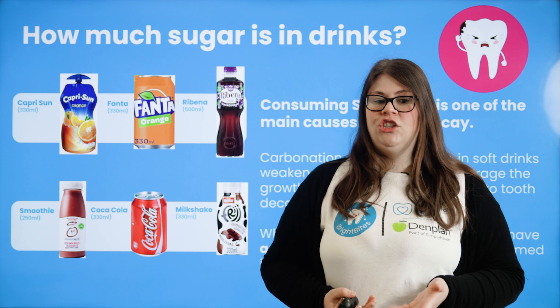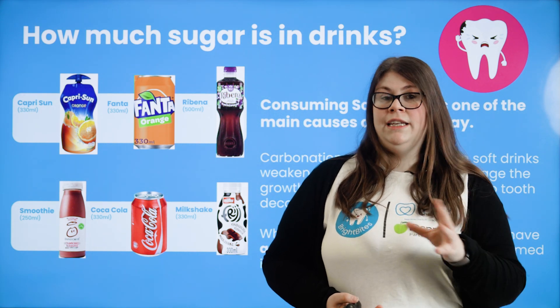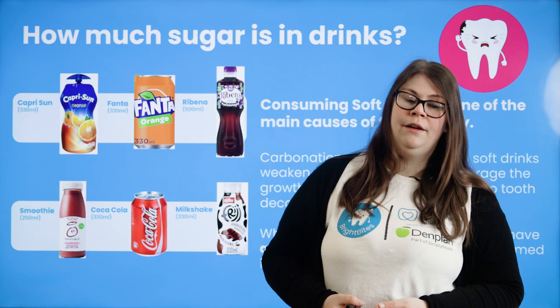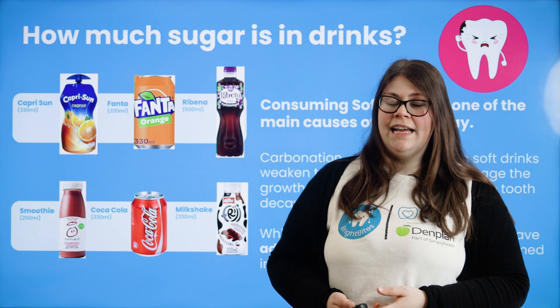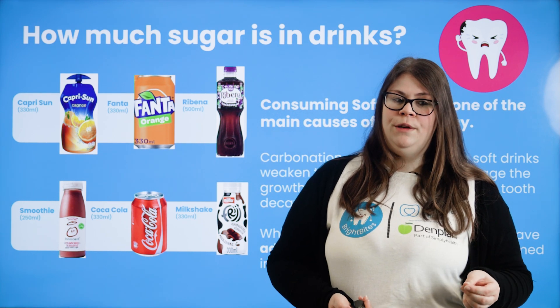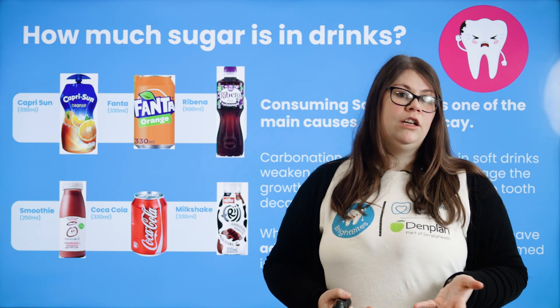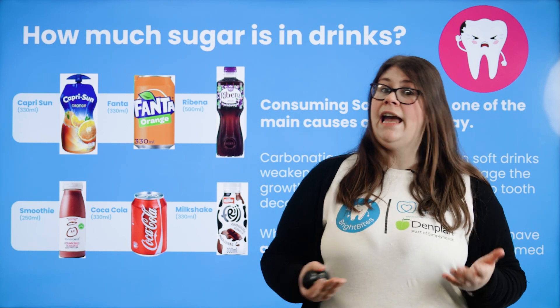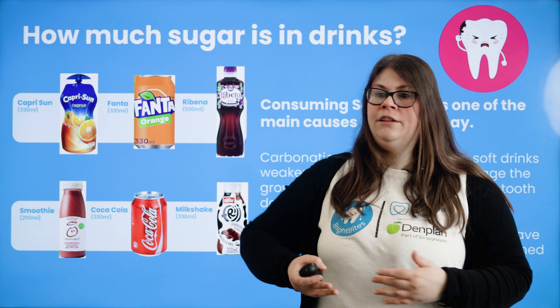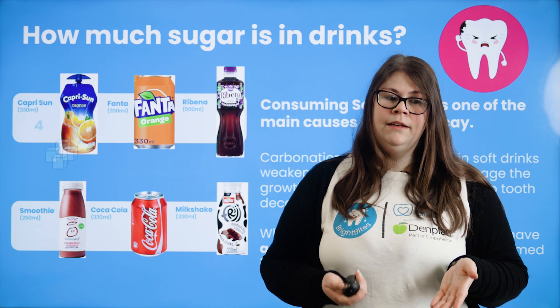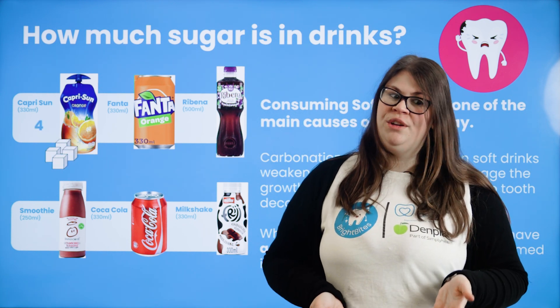The next slide covers how much sugar is in drinks, which ties in with the previous topic. It explains that sugary drinks are a large cause of tooth decay. Examples of drinks children commonly consume are shown — Capri Sun, Fanta, Ribena — each paired with sugar cube equivalents. Engage the children by asking: 'How many sugar cubes do you think are in a Capri Sun?' Then reveal the totals: Capri Sun has four sugar cubes, and Fanta the same.